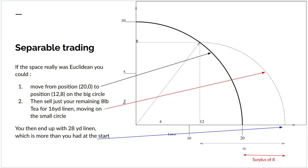Now this is what I'm calling separable trading and I'll show how the existence of separable trading would lead to a contradiction if commodity space was Euclidean. Start off with 20 units of linen. Move along the line of equidistance to the position where you have 8 of tea and 12 of linen.